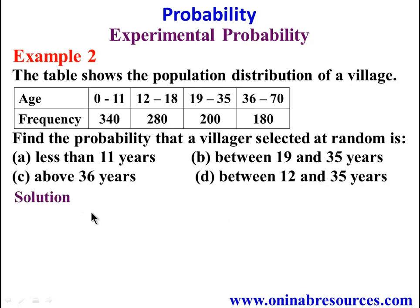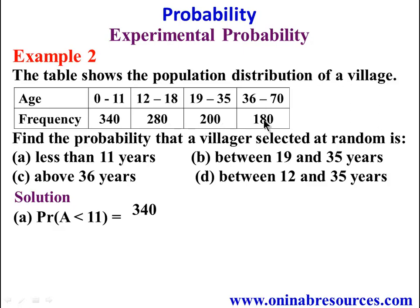Starting from part A, the probability of age less than 11 is the first age bracket, which is 0 to 11, and the frequency there is 340 over the total population of the village. To get the total population, we add all the frequencies: 340 plus 280 gives 620, 620 plus 200 gives 820, plus 180 gives 1000. So that's going to give us 340 over 1000.